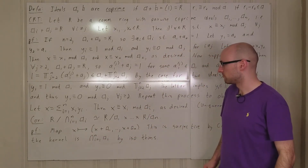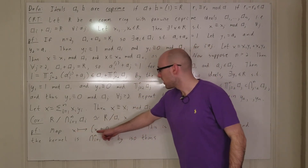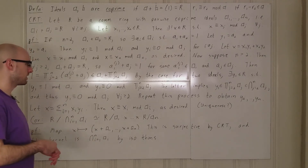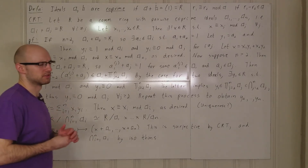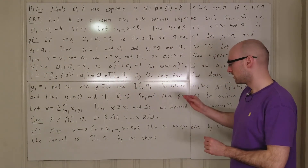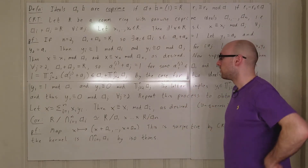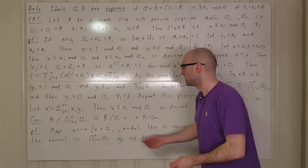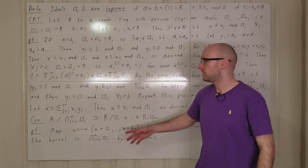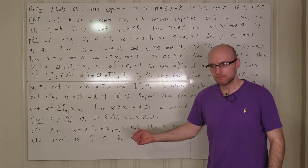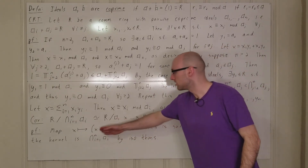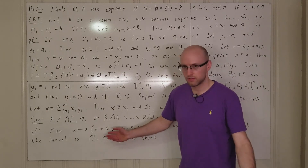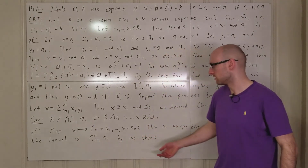The map is surjective by the Chinese Remainder Theorem — I accidentally said 'Cauchy'; I miss analysis. The kernel of this map: since the kernel of each coordinate map is the ideal ai, the kernel of the full map must be the intersection of all the kernels, which is the intersection of a1 through an.